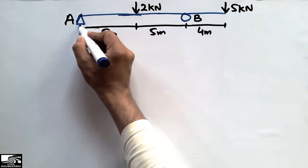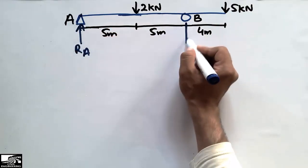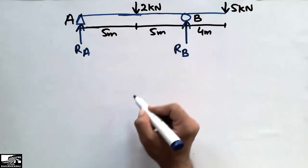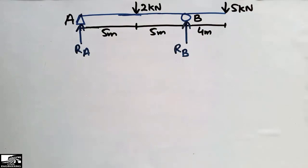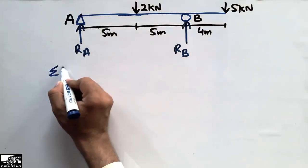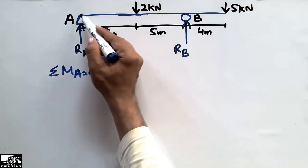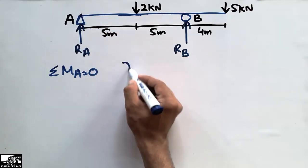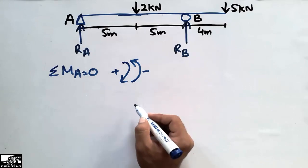To calculate the shear force and bending moment, we first need to find the reaction forces. Let's call RA the reaction force at point A, and RB the reaction force at point B. To find these reactions, we take the summation of moments at point A equal to zero, considering clockwise as positive and anti-clockwise as negative.